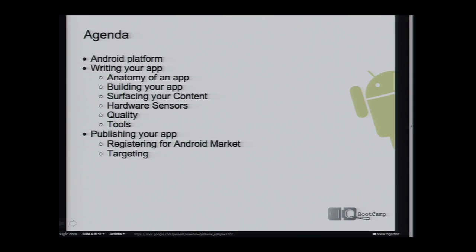Today I'm going to talk a little bit about what Android is, what the Android platform is, and how you develop for it. I'll talk about writing your first app — the anatomy of what makes up an Android application and the ways you'd go about building it. Then I'll talk about unique ways Android lets you surface your content, access hardware sensors, and how to make not just a good app but a great app. I'll also cover the tools you can use and the process for publishing on the Android Market.